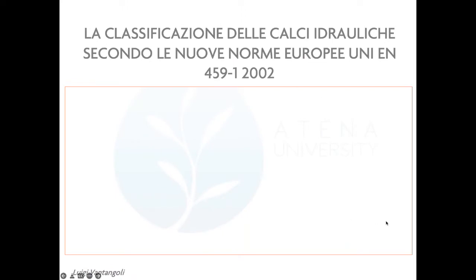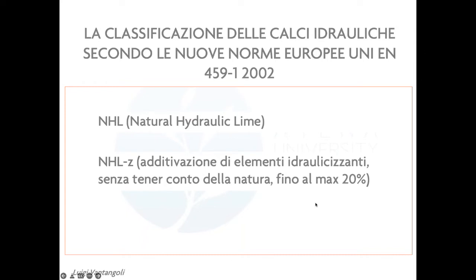Nella classificazione delle calci si aggiunge un terzo elemento: l'NHL-Z, che è un compromesso — calce idraulica naturale a cui si può aggiungere fino al 20% di elementi idraulicizzanti per aumentare le caratteristiche fisiche del legante. Purtroppo non viene specificato cosa devono essere questi elementi: si va dal clinker al cemento, ai silicati e così via.